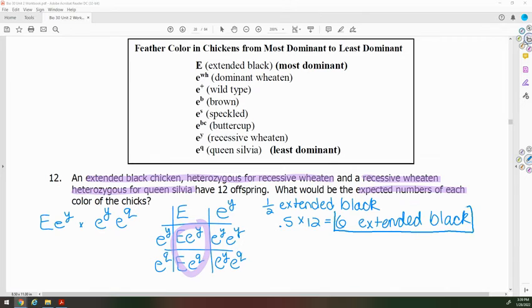Our other two genotypes in the Punnett square have an EY as their first allele, which means both of those are recessive wheaton. And it is two out of four, which is the same as one half.